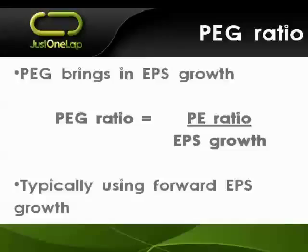We're looking at that forward growth, not the historic. And the problem there is really very simple — PE ratio is price and earnings, and those are historic. Now we're looking at a growth number and all sorts of things can go wrong. We can have expectations of growth, and then issues such as 2008 can suddenly happen, and our expectations are completely taken to lunch.